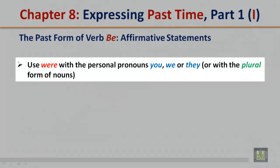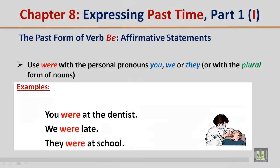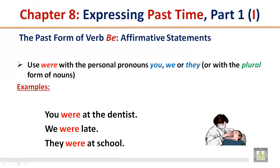Use 'were' with the personal pronouns you, we, or they, or with the plural form of nouns. Examples: You were at the dentist. We were late. They were at school.